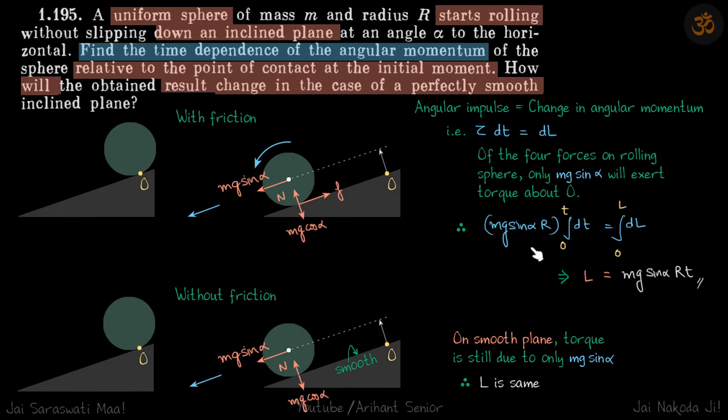Because Mg sin alpha times R is constant, it will be outside the integral. We'll put the limits and get L equals Mg sin alpha times Rt, our answer.